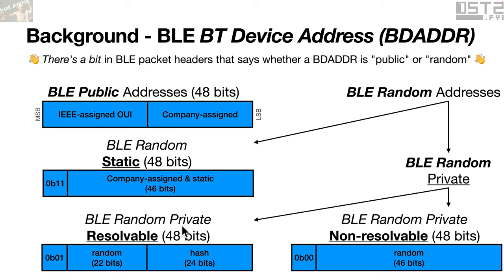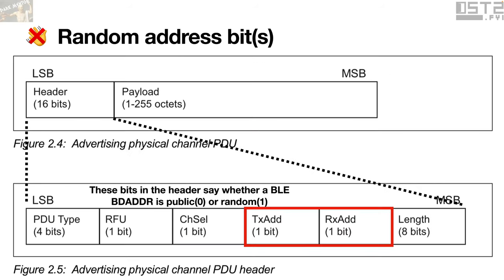Then there is the BLE random private resolvable: 22 bits of random, then a hash that can be used between two devices to identify that they share a key. In the extended version of this talk, I can tell you that the bits in the BLE advertisement PDUs — portable data units — are the bits that actually say whether a device is public or random: the transmit address is public or random, and the receive address is public or random, baked into a 16-bit header in the advertisements.